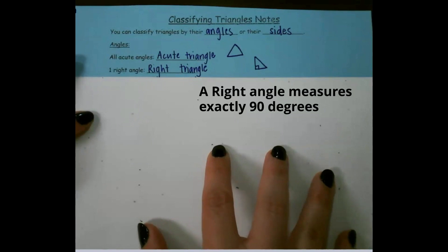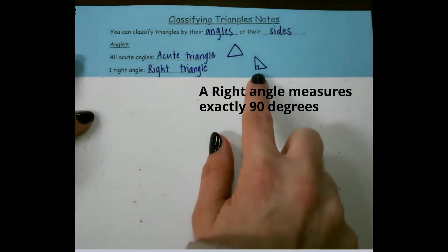If it has one right angle, it would be a right triangle and looks something like this one.